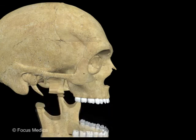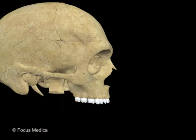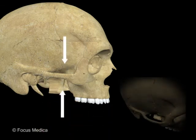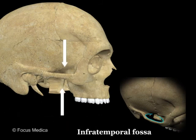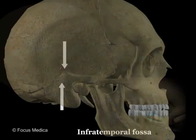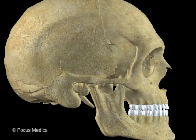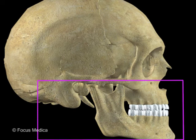The mandible has to be moved down to enable better visualization of the bones of the infratemporal fossa. A few structures of the base of the skull are also seen, for example, the styloid process.